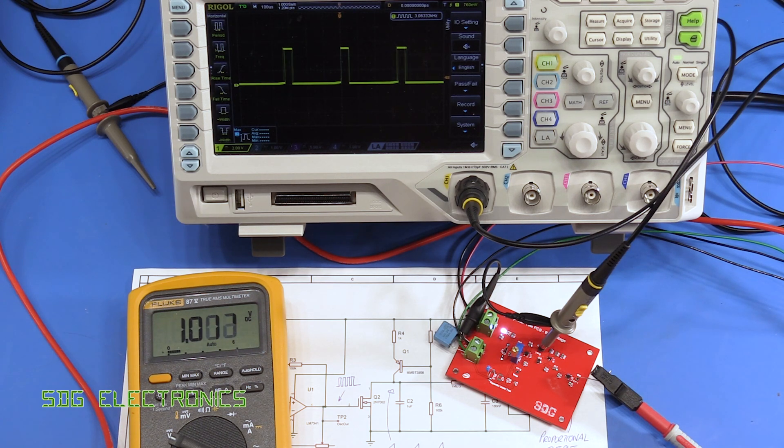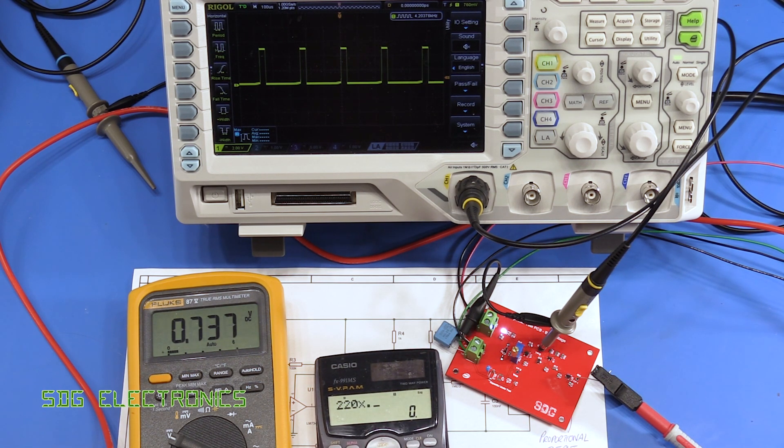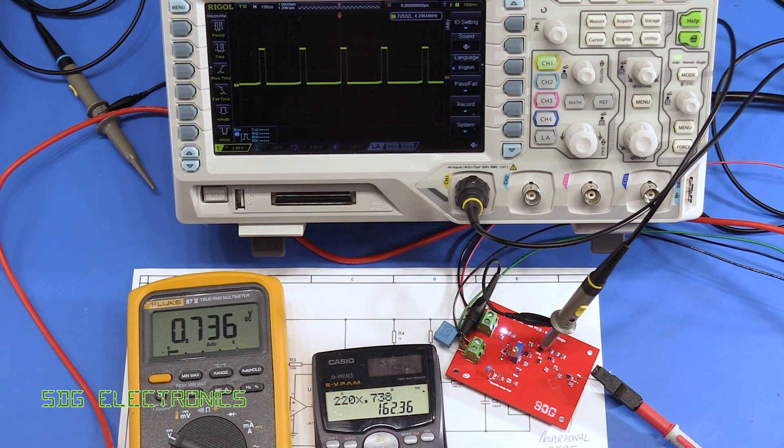Now if we increase the bias to 0.5 volts, you can see that this has now dropped to about 0.74 volts. So that means our 220 nanofarad capacitor is now 162 nanofarads.